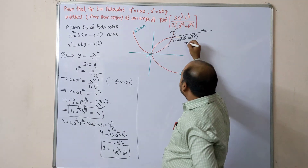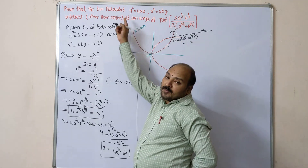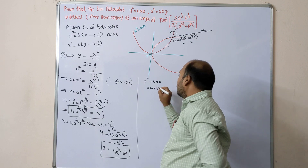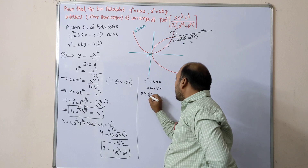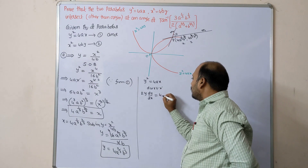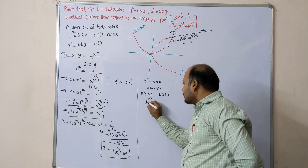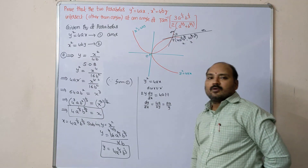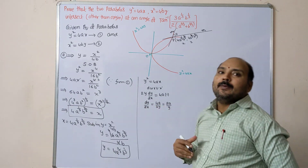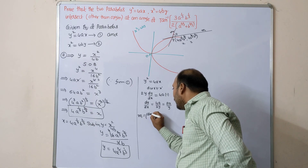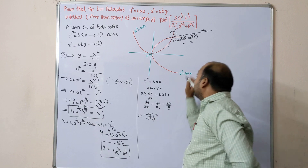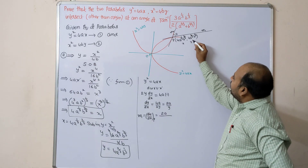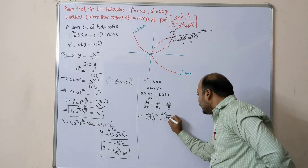Now at point P = (x₁, y₁), find the slope of the first curve. For y² = 4ax, differentiating with respect to x: 2y·(dy/dx) = 4a, so dy/dx = 2a/y. At point P, substitute y = 4a^(2/3)·b^(1/3): m1 = 2a / (4a^(2/3)·b^(1/3)).